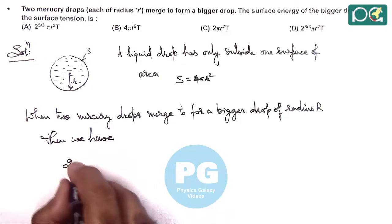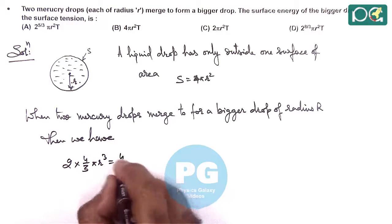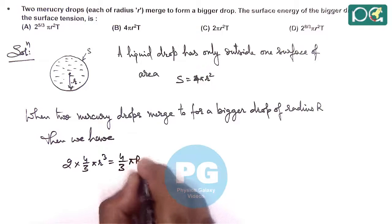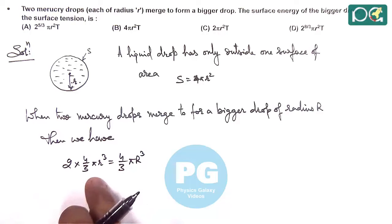we can write 2 × (4/3)πr³ = (4/3)πR³, because the bigger drop volume is same as that of the volume of two small drops. So simplifying this gives us, the radius of bigger drop is 2^(1/3) × r.